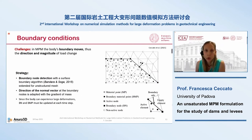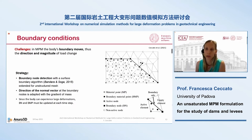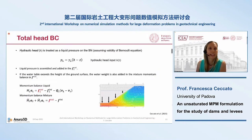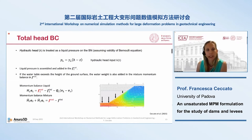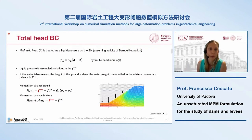In MPM, the boundary moves and the direction and magnitude of the load change at each time step. So we implemented a procedure to find the boundary nodes at each load step and recompute the normal at the node using the gradient of mass. The hydraulic head is treated as a liquid pressure on the boundary node. Assuming the validity of the Bernoulli equation, the pressure is computed by multiplying the unit weight of the liquid by the pressure head, which is the applied total head minus the geometric head. Since the geometric head can change during the calculation, this liquid pressure is assembled and added as an external force of the liquid. If the water table exceeds the height of the groundwater surface, the water weight is also added in the mixture momentum balance equation.